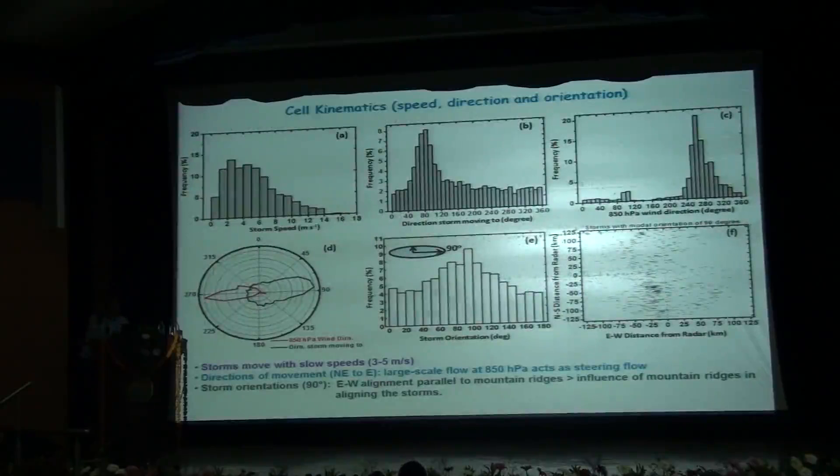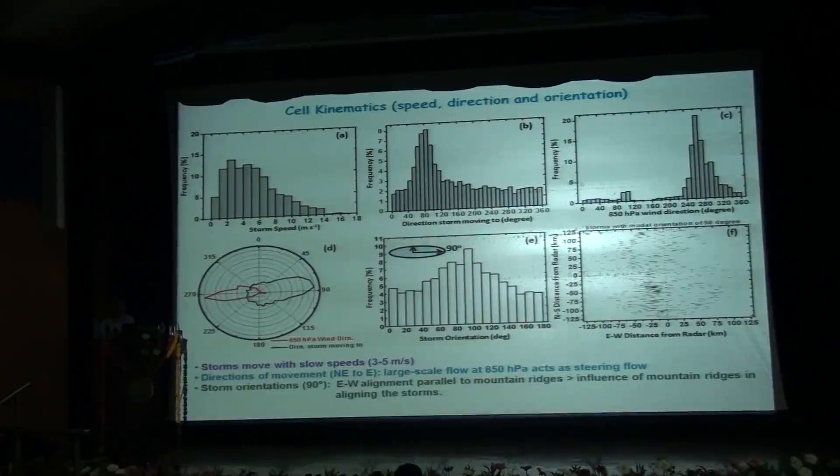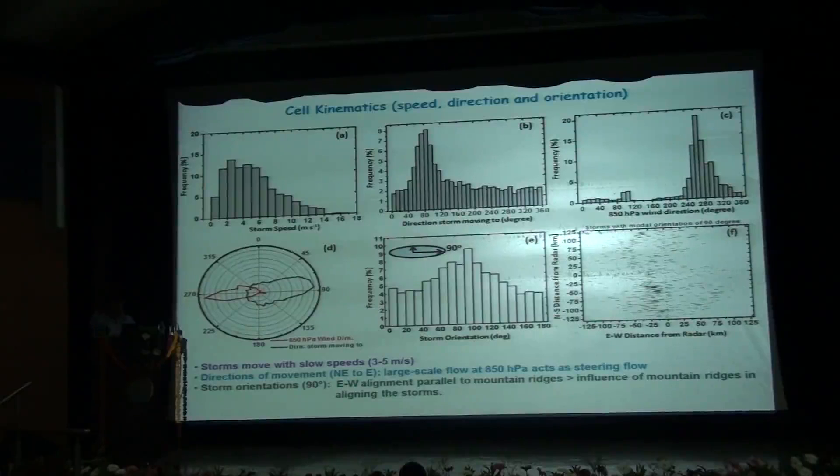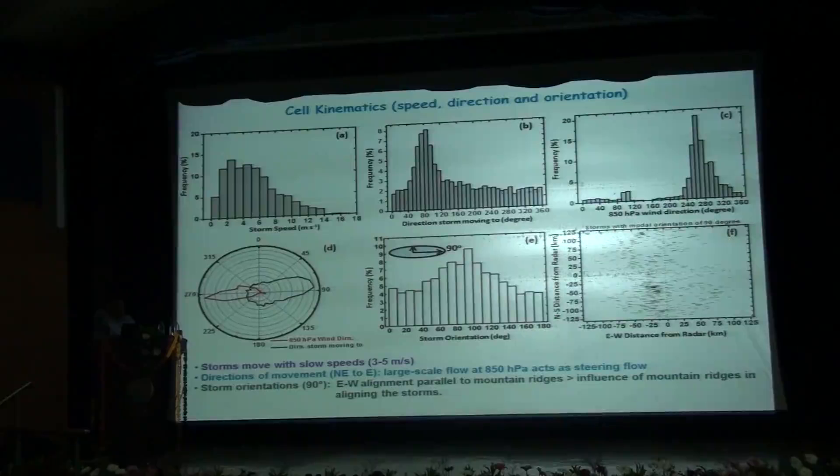Now we look into the kinematics of the convective cells in terms of their speed, their direction, their orientation that they acquired during their lifetime. The frequency distribution of the storm speed shows they are also distributed in a normal fashion with a sharp rise and gradual fall. The storms move with a slower speed of 3 to 5 meters per second on average. Storms during their lifetime moved in a variety of directions but they were more preferred along the northeast to east direction from 60 to 100 degrees.